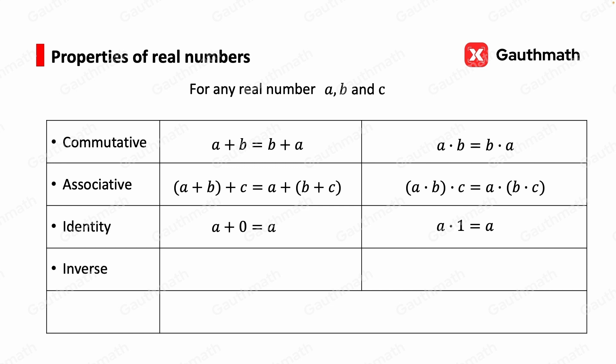A number and its opposite are additive inverse because the sum of them is zero. A non-zero number and its reciprocal are multiplicative inverse because the product of them is one.